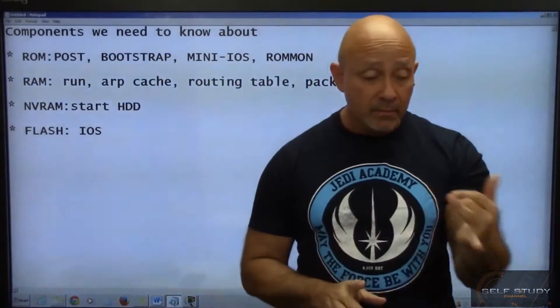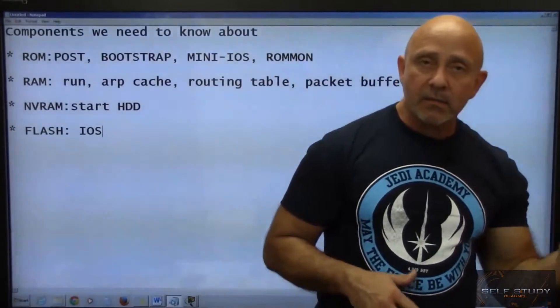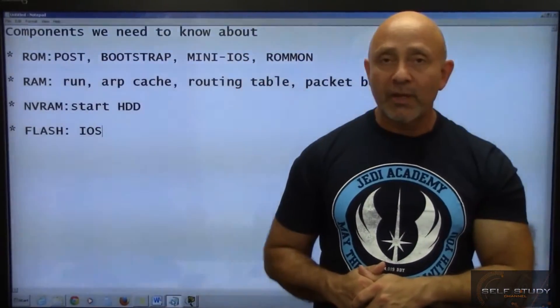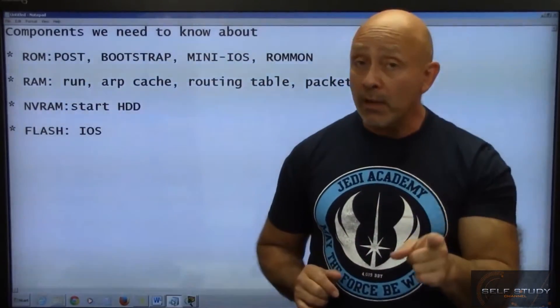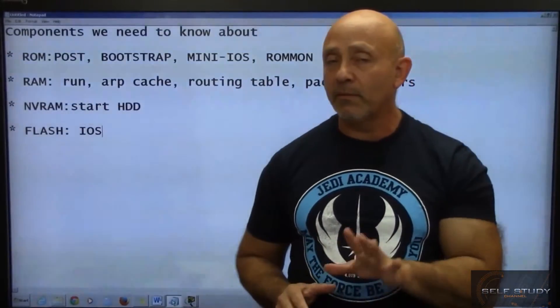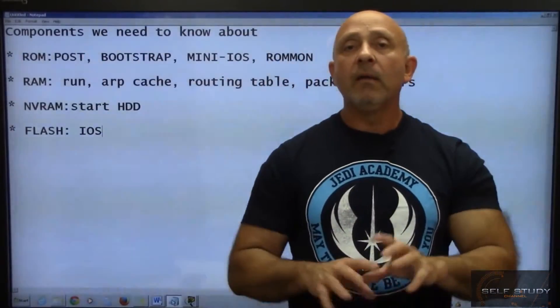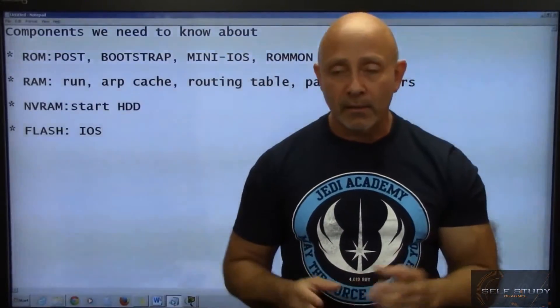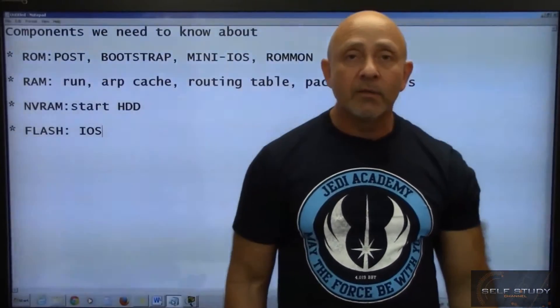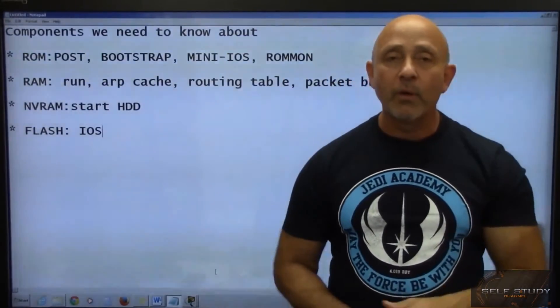So ROM is the first thing, that has the POST. The first thing that happens, then the Bootstrap. Bootstrap takes over, looks for the IOS. Once the IOS is found, which by default is in Flash, then the Flash looks for the NVRAM. Important: Flash looks for the NVRAM to see what configuration is in there, configuration registry. And then it says, oh okay, there's configurations in this startup config file, let me load them. And then you see all these pound signs, which is decompressing the operating system into RAM. And boom, now you can go ahead and log in and start working. So these are your four components and a very brief introduction to the boot up process of the router.